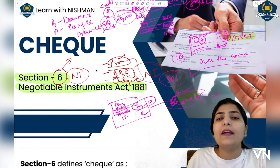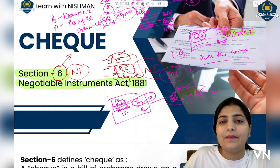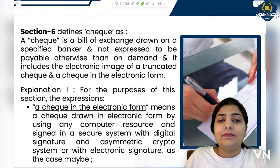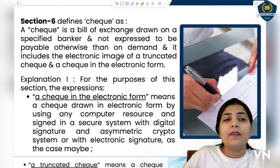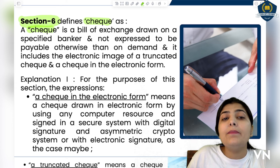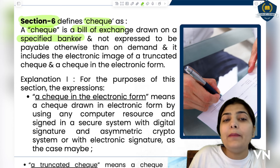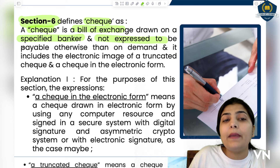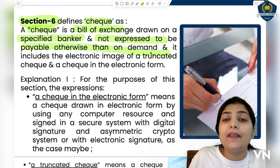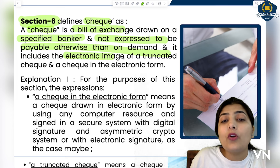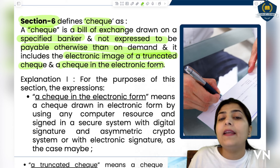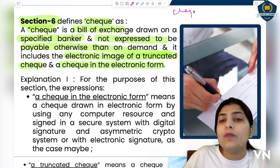Section 6 defines a cheque as: 'A cheque is a bill of exchange drawn on a specified banker and not expressed to be paid otherwise than on demand.' It also includes the electronic image of a truncated cheque and a cheque in the electronic form.